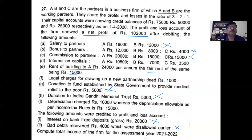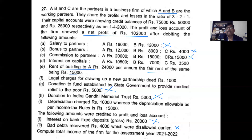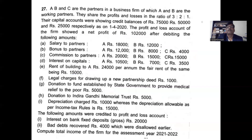In the book profit you give working partner remuneration. A and B are the working partners, so amounts paid to A and B are considered. In this problem there are two heads of income: income from business and income from other sources. The total of both heads is the gross total income, from which you deduct 80G deductions to arrive at total income.